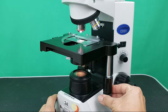Then, using the course adjustment knob, watch the stage as you decrease the distance between the slide and the objective. Continue turning the course adjustment knob until the objective stops.